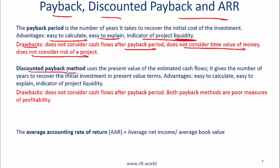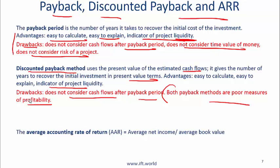A slightly better method is the discounted payback method, which uses the present value of the estimated cash flows and gives the number of years to recover the initial investment in present value terms. The advantages are that it's easy to use, easy to explain, and an indicator of liquidity. The drawback is that it does not consider cash flows after the payback period. It does consider time value of money and in a sense it considers riskiness because a more risky project will have a higher discount rate. But note that the main advantage of both these methods is that they give you an indication of project liquidity — however, both are poor measures of profitability.